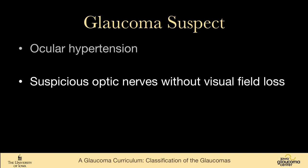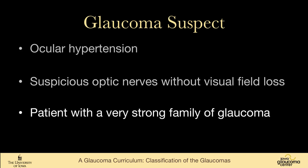One can also have suspicious-looking nerves without visual field loss. Some call that pre-perimetric glaucoma, though I don't particularly like that term. New imaging modalities like OCT have helped differentiate those people into probably normal versus glaucomatous. People who have a very strong family history of glaucoma can also be considered glaucoma suspects, as they have a higher than baseline risk of developing glaucoma.